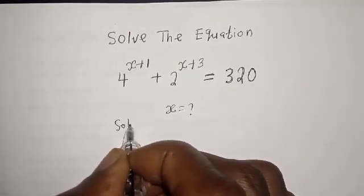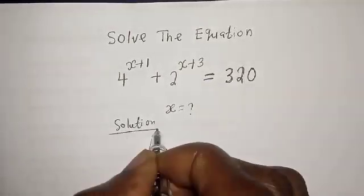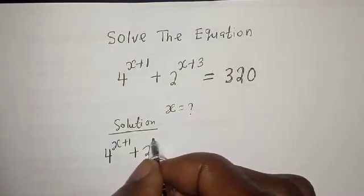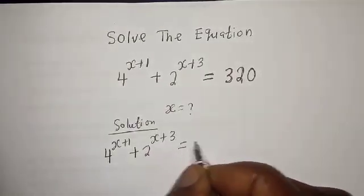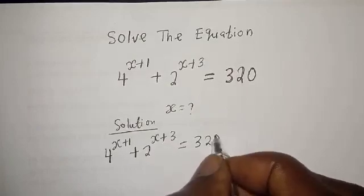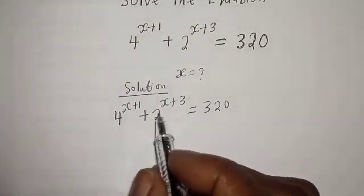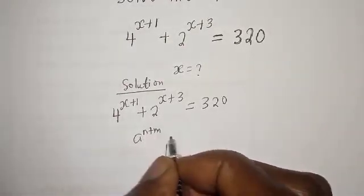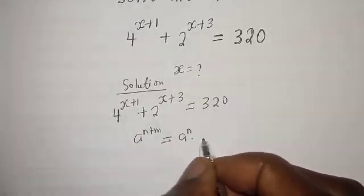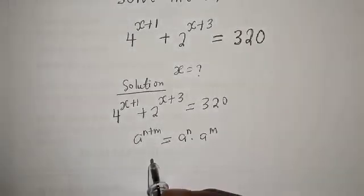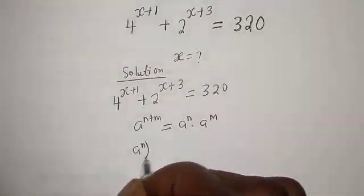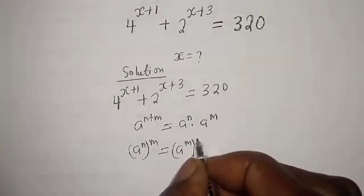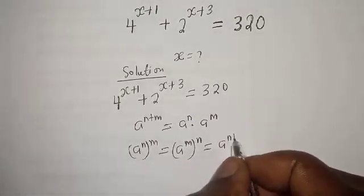Solution. We have 4 raised to power x plus 1, plus 2 raised to power x plus 3, equal to 320. Take note that if you have a raised to power n plus m, this equals a raised to power n multiplied by a raised to power m. Also, a raised to power n, to the power of m, equals a raised to power nm.